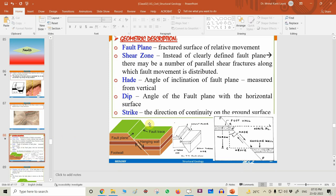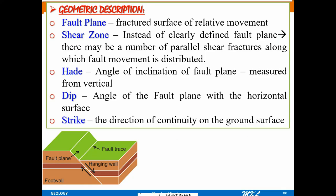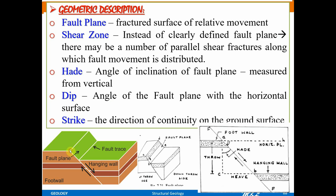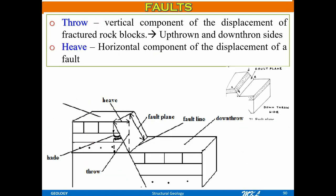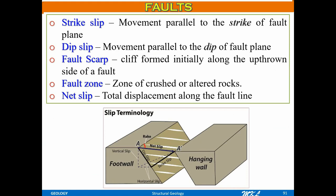The strike is the direction of the continuity of the fault on the ground surface. Depending on the slip, we can also classify faults. There are three types: strike slip fault, dip slip fault, and net slip fault. Movement parallel to the strike is called strike slip; movement parallel to the dip of the fault plane is called dip slip; and the total displacement along the fault line is called the net slip.